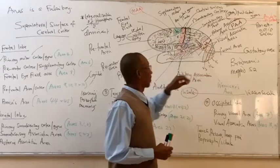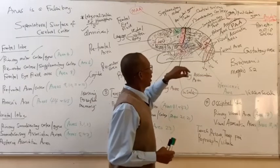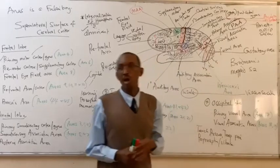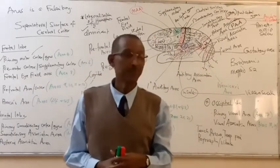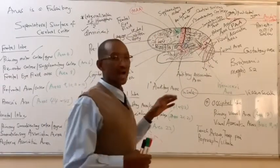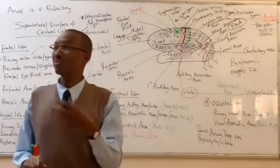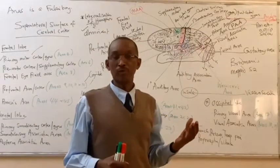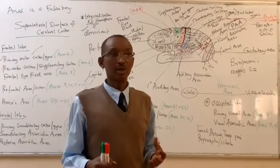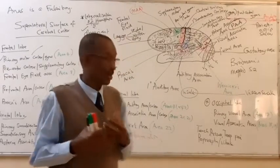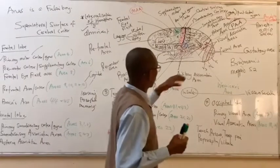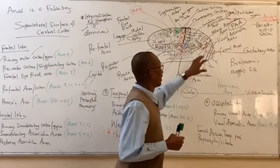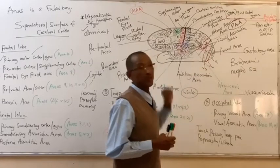The occipital lobe is responsible for our vision. So obviously there has to be some visual stimuli that we can perceive from our external environment or from our minds for this area to be able to recognize or identify any stimulus with regard to vision.